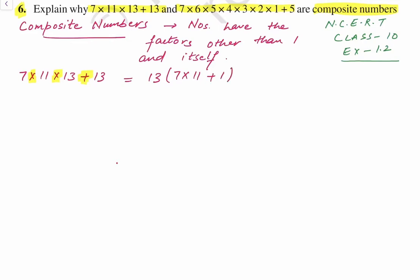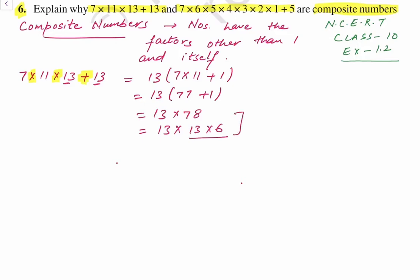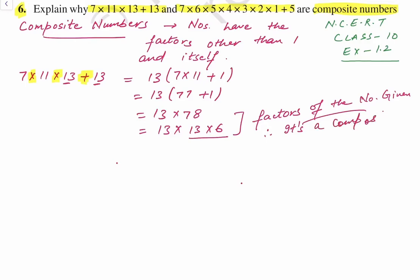So 13 comes out as common. This can be written as 13 into (7 into 11 plus 1), which is 13 into (77 plus 1), giving us 13 into 78. So basically this number has the factors 13 and 78. If we further expand 78, we get 13 into 13 into 6. These are the factors of the given number. Therefore, it's a composite number.